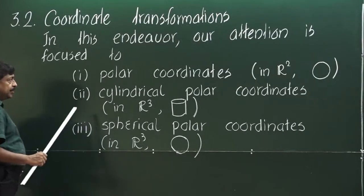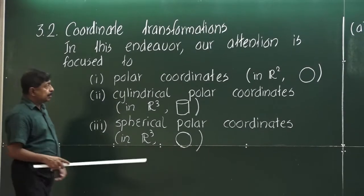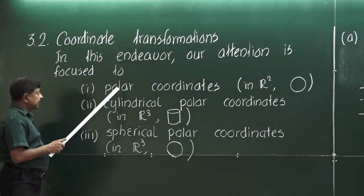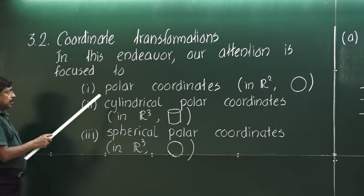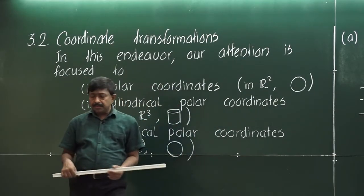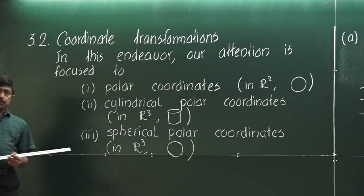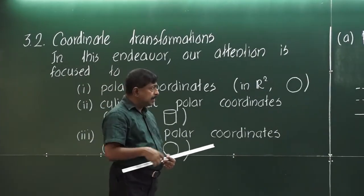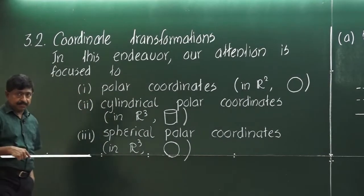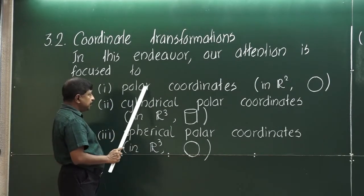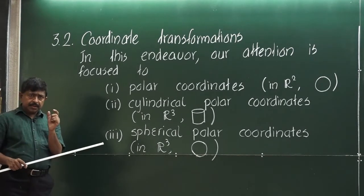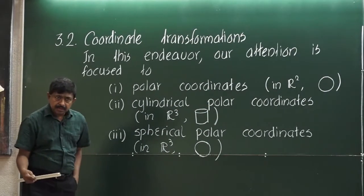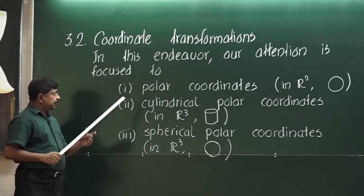First, polar coordinates, which are used in R2. In two-dimensional space, when the domain of integration is a circle, this transformation is always useful. Because once your domain of integration is a circle, it is extremely hard to find limits, and even if you can find them, it is extremely hard to evaluate the integral in the rectangular coordinate system. Therefore, we use polar coordinates. The domain of integration should have some circular shape — it can be a circle, a sector, or some portion of a circle.